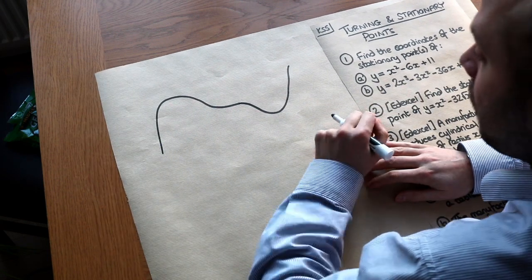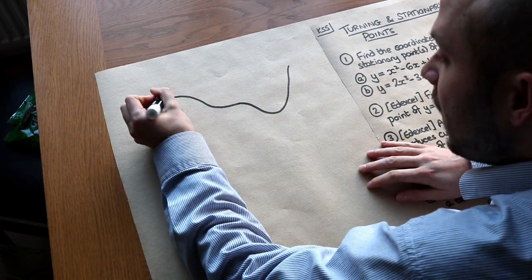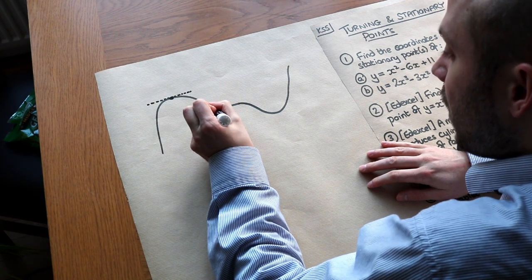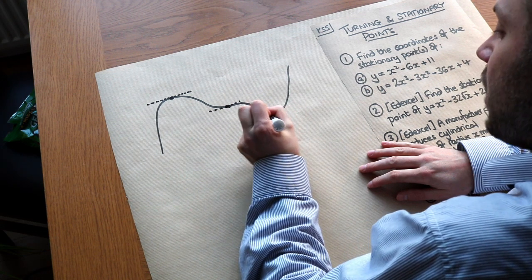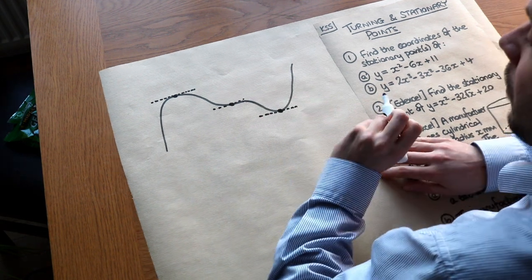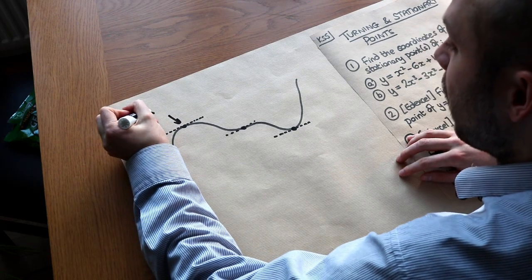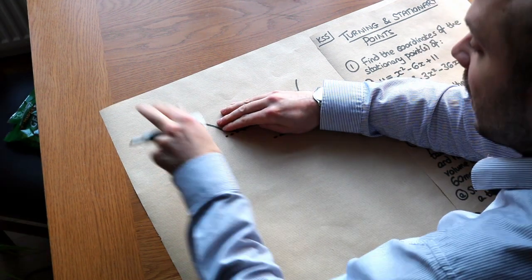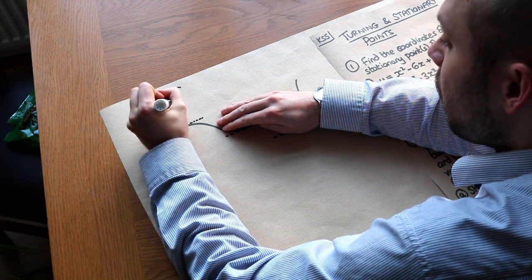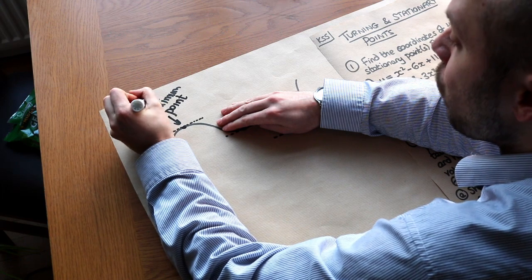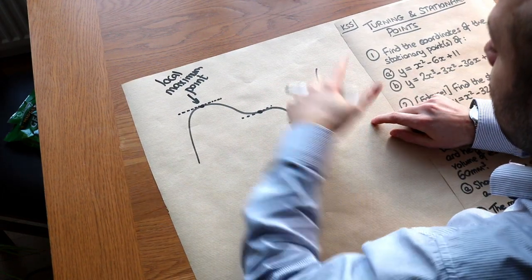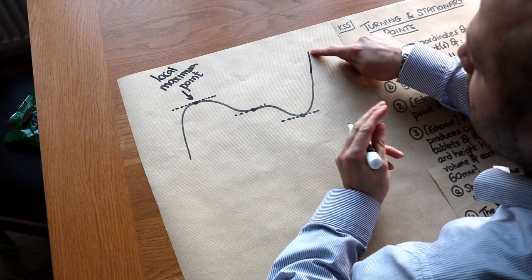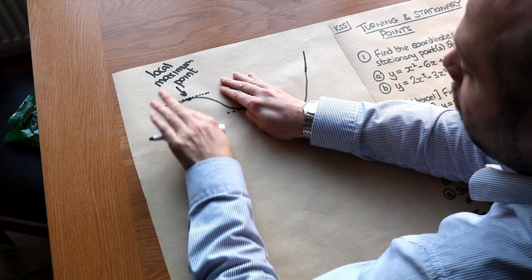If we look at this particular curve, we can see that the gradient is zero at this point — it has no slope at all. At this point the gradient is also zero, and at this point the gradient is also zero. This is known as a maximum point, because the graph is at its maximum in the vicinity here. We say it's a local maximum, because the graph goes up forever so there is no overall maximum, but locally in this area we do have a maximum.